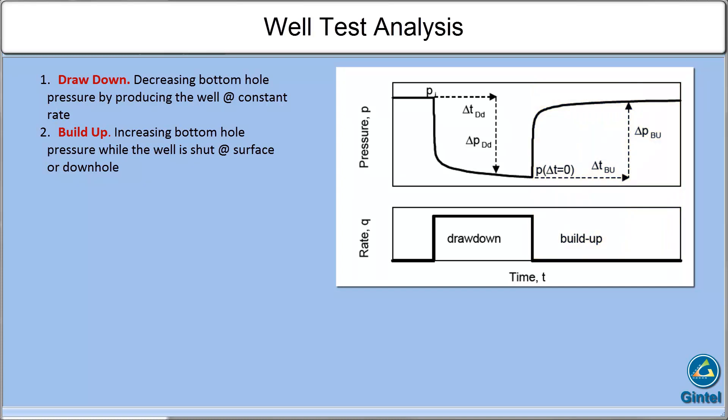Most reservoir information obtained from a drawdown test can also be obtained from a pressure buildup test, but there are advantages and disadvantages for both. The major disadvantage of drawdown is the difficulty of maintaining a constant production rate that will influence quality of acquired data.